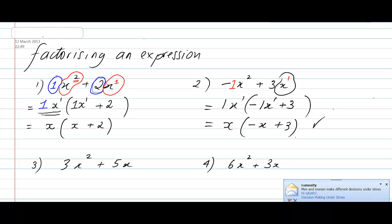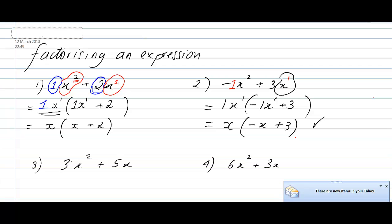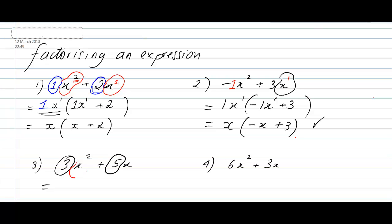Let's move on to something slightly more difficult, where you have to find factors for numbers and letters and you've got something like a quadratic expression. Here we've got 3x squared plus 5x. I look at the 3 and the 5 and ask myself whether any number goes into 3 and 5 — I'm trying to find the common factors for both of them. In this case there's none, so I leave that out. Then looking at x squared and x to the power of 1, x to the power of 1 has the lowest power, so that will be our factor.